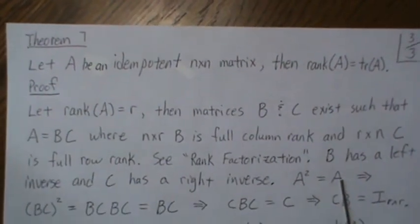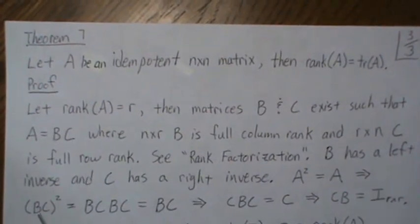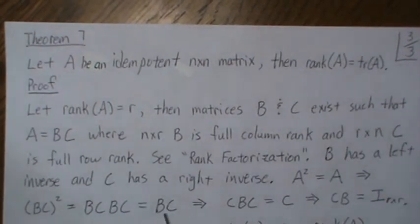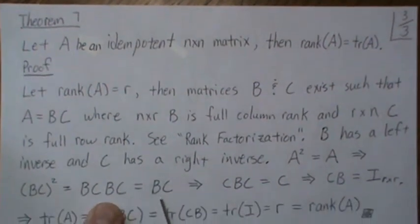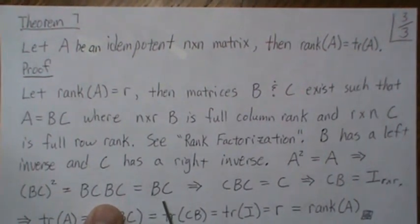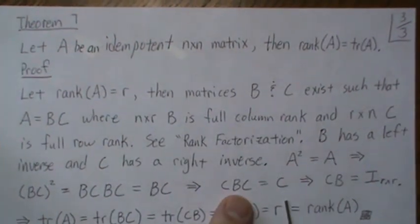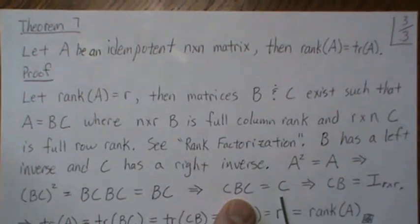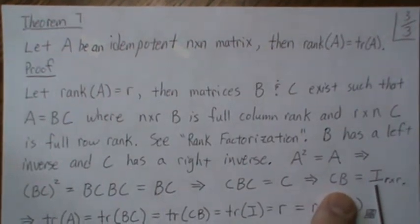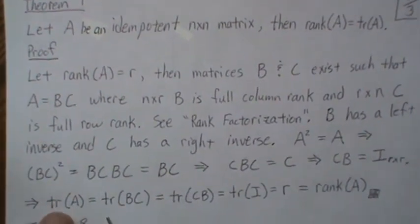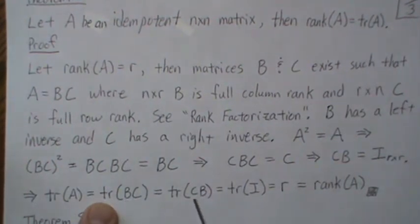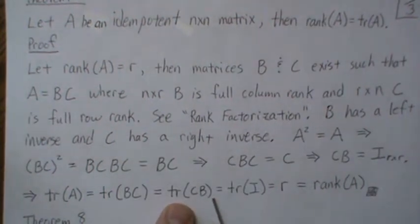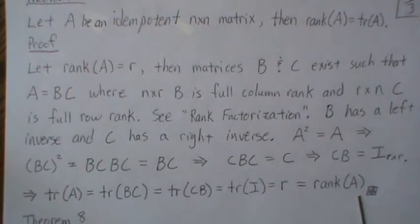Since B is full column rank it has a left inverse, and C has a right inverse. Since A squared equals A, we get BCBC equals BC. Pre-multiplying by the left inverse of B and post-multiplying by the right inverse of C gives CB equals the R by R identity matrix. Then trace of A equals trace of BC, and by the trace cyclic property, equals trace of CB, which equals trace of the identity, which is R — the rank of A. So trace of A equals rank of A.